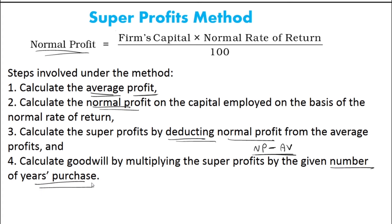Super profit multiplied by the number of years of purchase gives you the goodwill under the super profit method.